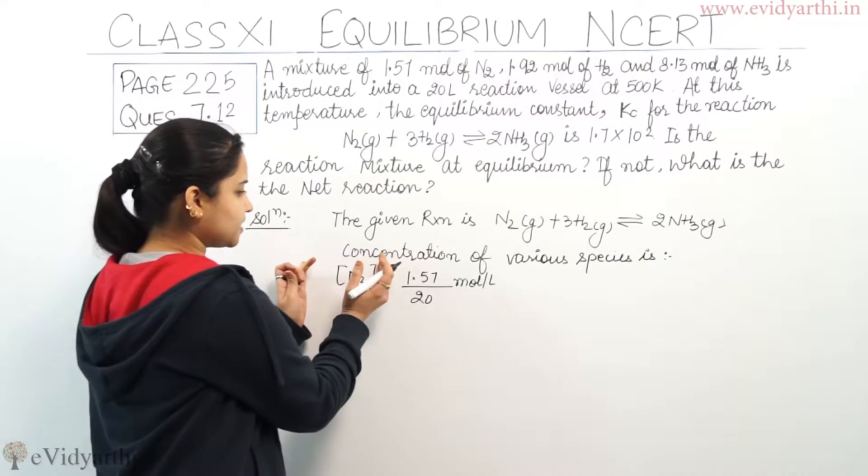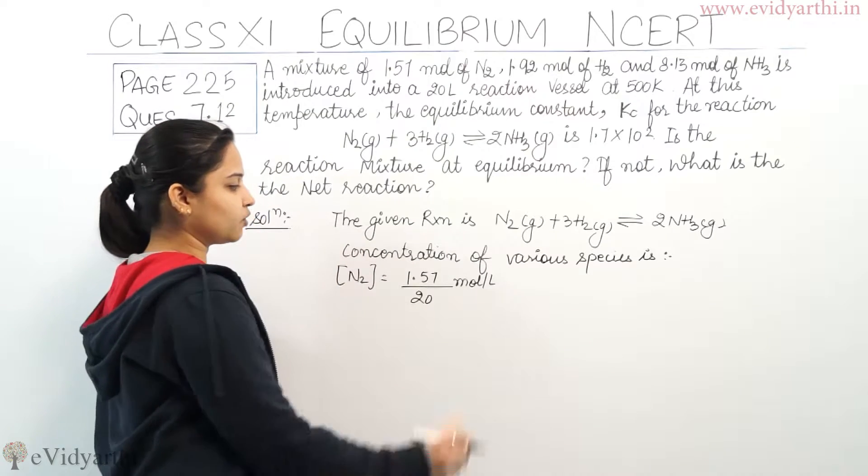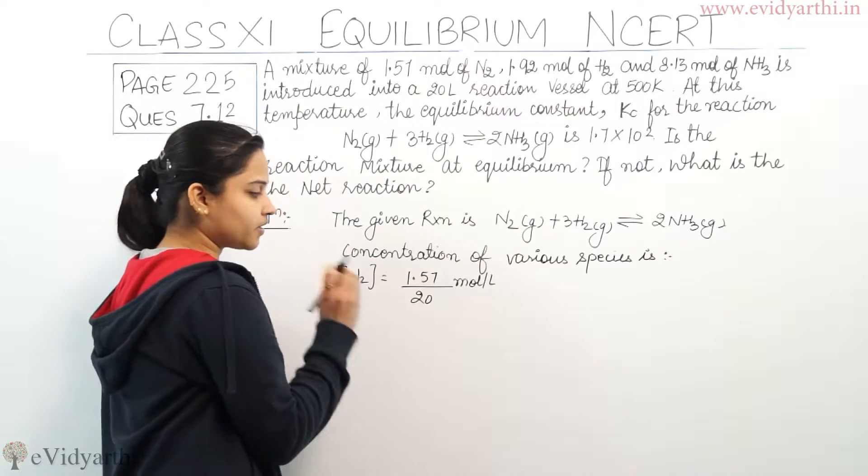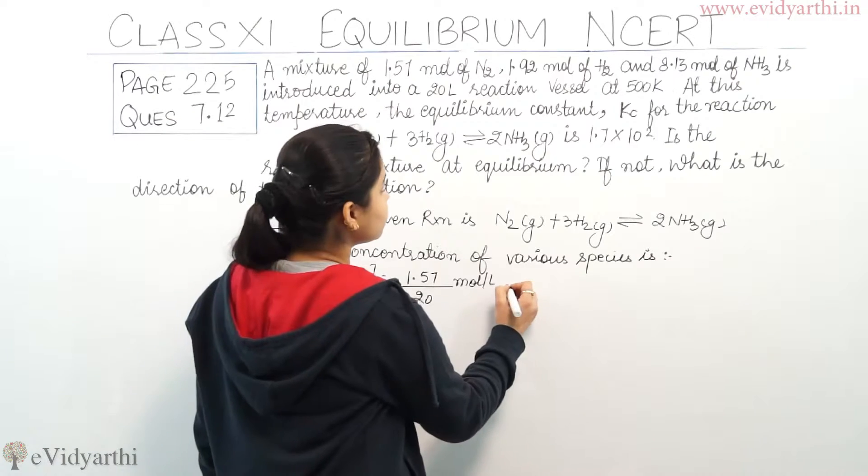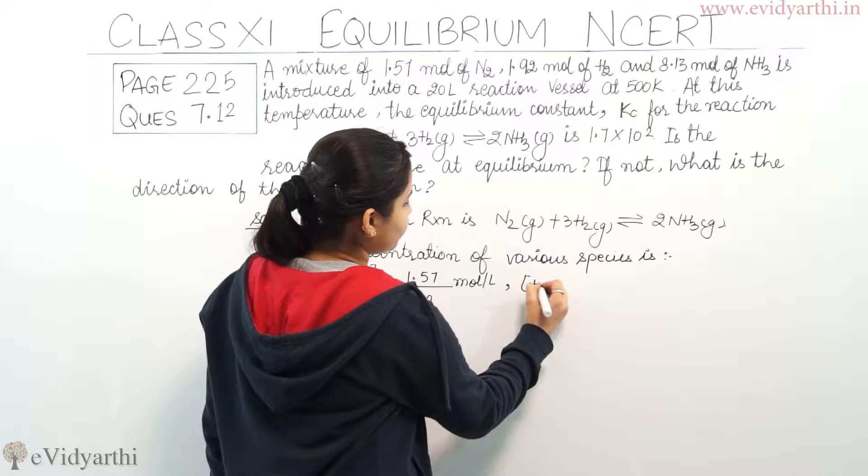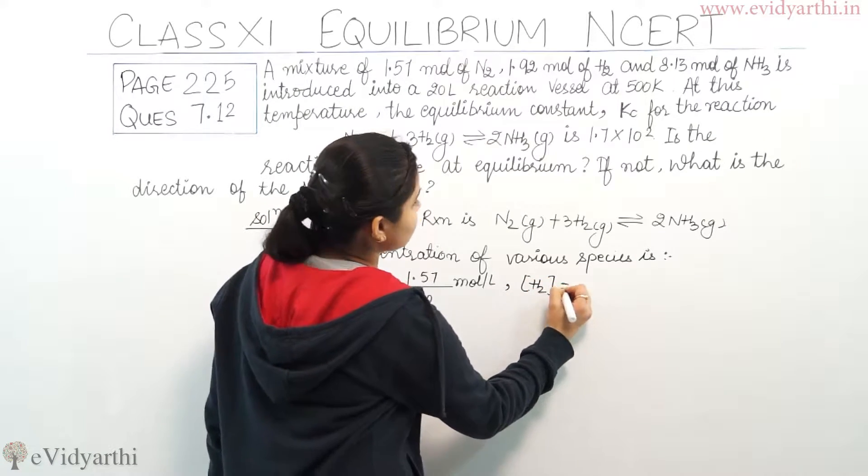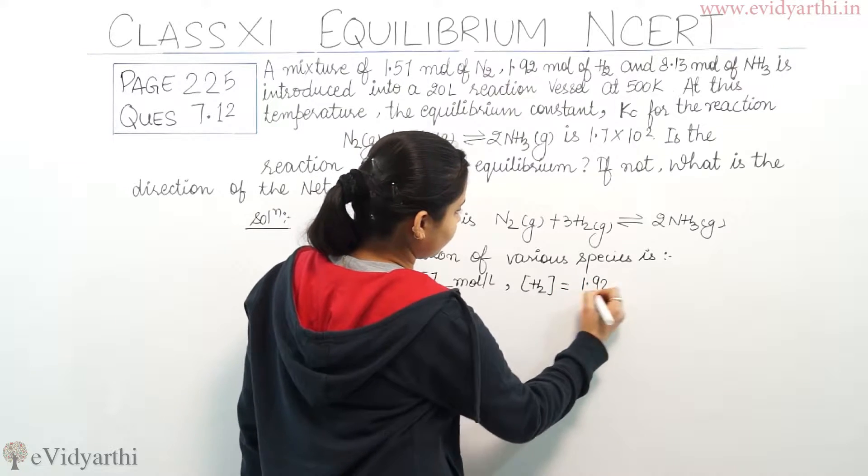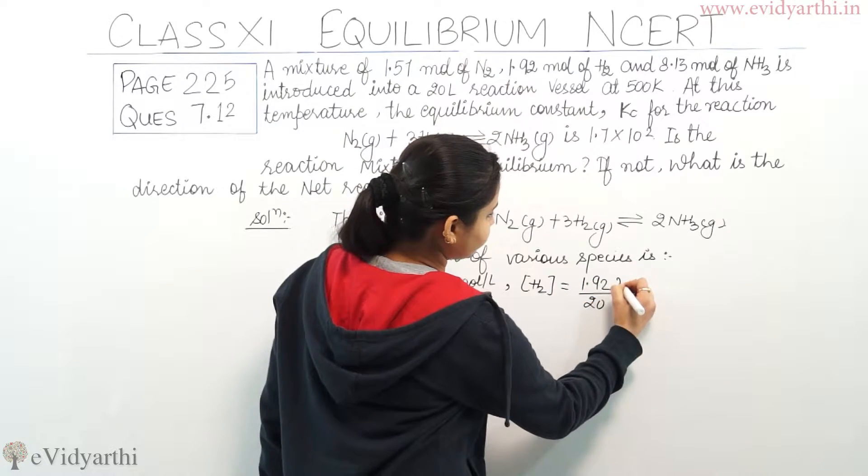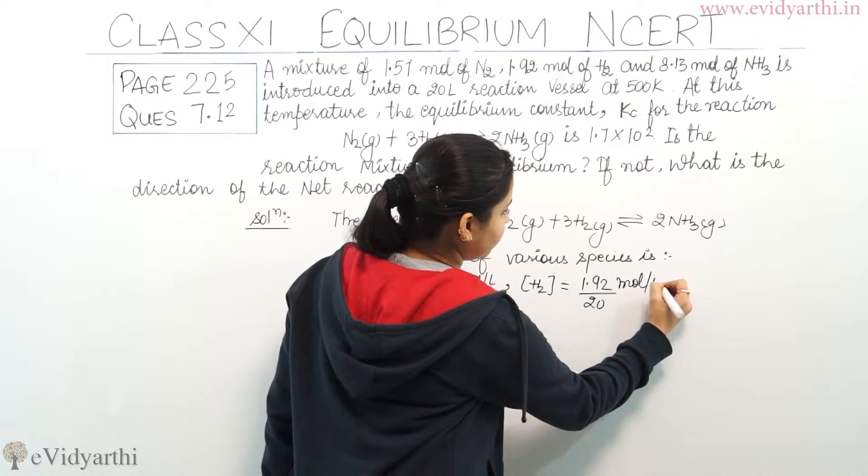So obviously, if I calculate concentration of nitrogen gas, it would be 1.57 divided by 20 mol per litre. Same is with hydrogen. The concentration of hydrogen gas is equals to 1.92 divided by 20 mol per litre.